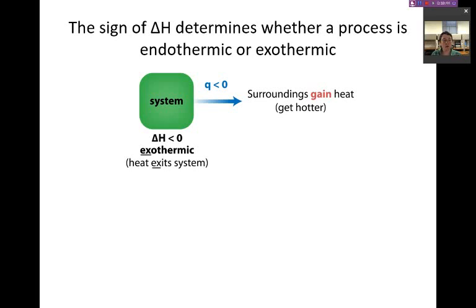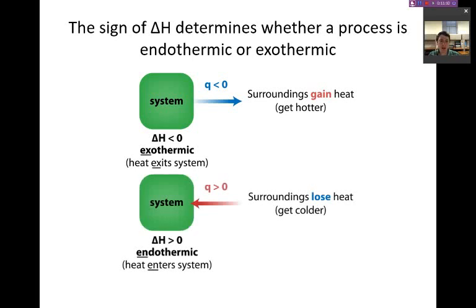Because we often think of enthalpy in the form of heat, we can talk about processes that gain or lose heat. And the terms that we use are endothermic and exothermic. A reaction is exothermic when heat exits the system, when the system loses heat and the surroundings gain that heat. The surroundings would be getting hotter. A reaction is endothermic when the system gains heat, when it enters the system, endothermic, enter. The surroundings lose that heat and they get colder.